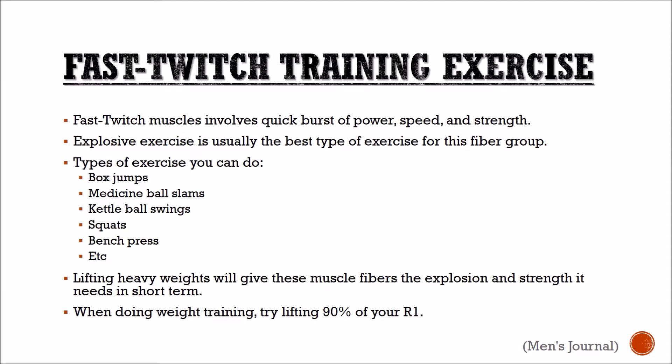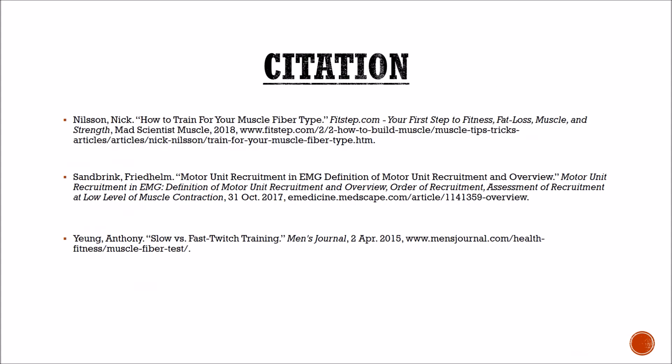Fast twitch training usually involves quick bursts of power, speed, and strength. Any explosive type of exercise can increase this muscle fiber. Some exercises include box jumps, medicine ball slams, squats, and bench press. Lifting heavy weights gives these muscle fibers the explosion and strength they need. When training these muscles, you will want to try lifting 90% of your R1.